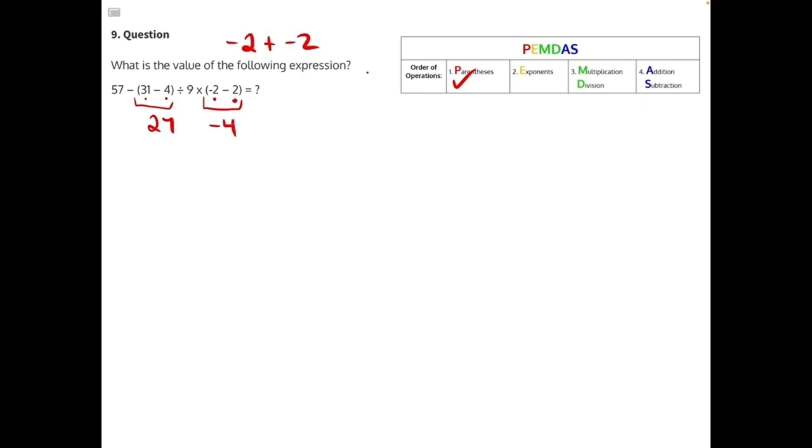Now we can rewrite the expression and continue to apply PEMDAS. 57 minus 27 divided by 9 times negative 4. There are no exponents, so we can move to multiplication and division.